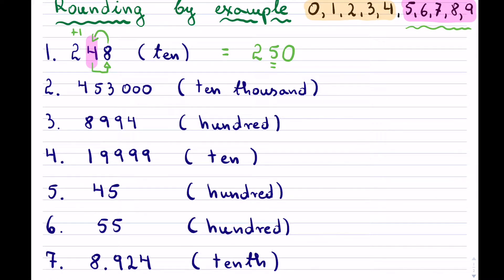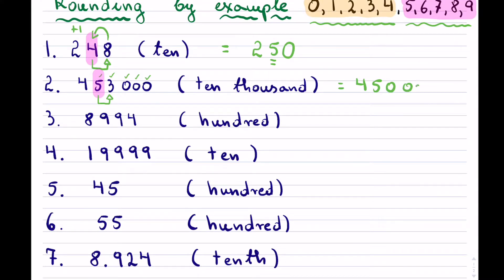The second example asks us to round to the ten-thousands. We have to find the ten-thousands first: ones, tens, hundreds, thousands - there we have it. The ten-thousands is the 5. Rounding looks at the digit next to it on the right-hand side, which is 3. Since 3 is between 0 and 4, we keep the 5 as it is. It doesn't go up by 1. The answer is 450,000 - we zero off all the other digits.